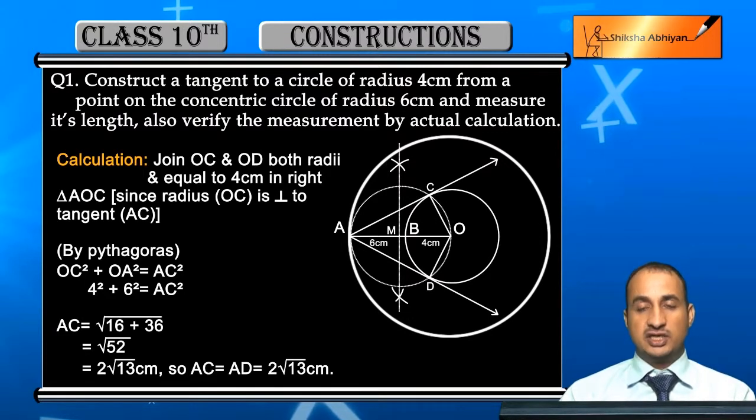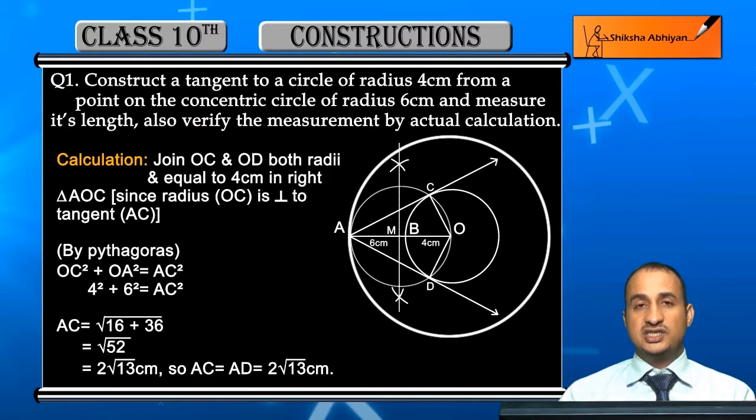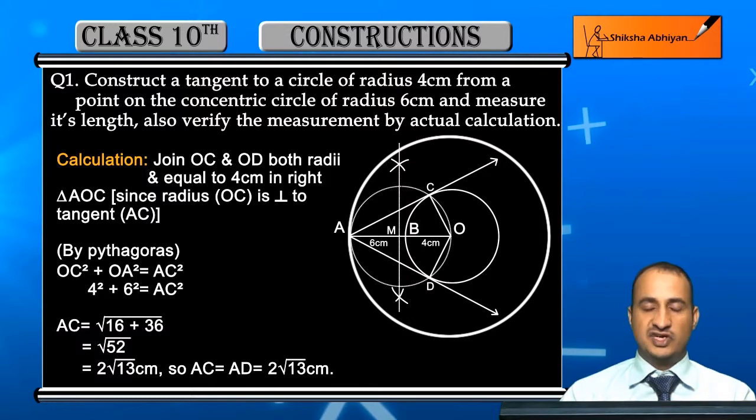Aap likh sakte hain AC square is equal to OC square plus OA square. Ab OC 4 ho gaya, OA 6 ho gaya, yeh apne value rakhi. Is equal to AC square, to ab AC kya ho jayega? Square root of 4 ka square 16, 6 ka square 36, aur dono ko add karaye to square root of 52.